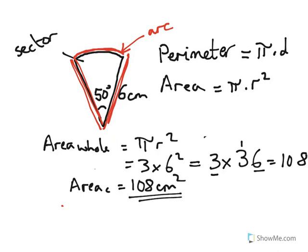So, the area of the whole circle is 108 centimetres squared. The area of our arc then, or the area of our sector, the little piece of pizza that we have, is going to be 50 parts, it's a 50 degree angle, out of the whole area, which is 360, times 108. And that's how we work out areas for sectors.